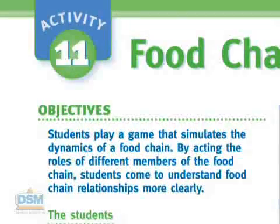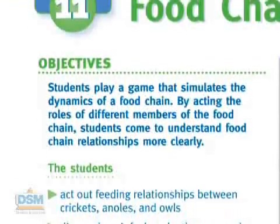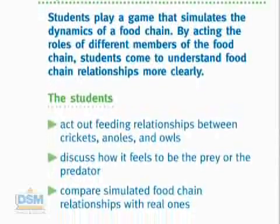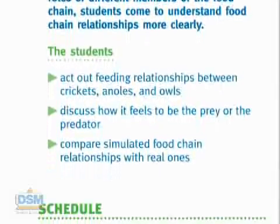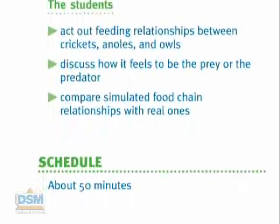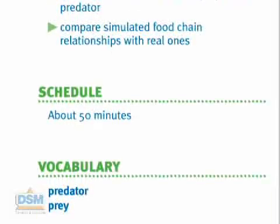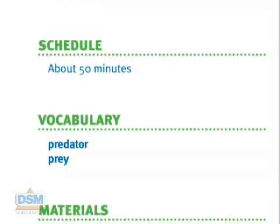Students also learn what characteristics help both predator and prey animals to survive. A predator refers to an animal that hunts and eats other animals. Prey is the term for the animal that is hunted and eaten. In Activity 11, students act out feeding relationships among crickets, anoles, and owls and discuss how it feels to be the prey or predator. This activity will take about 50 minutes.